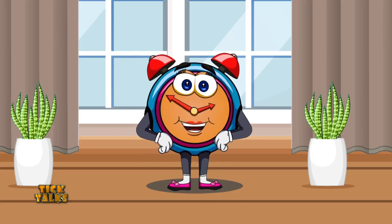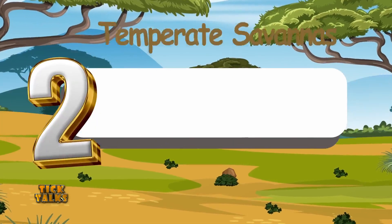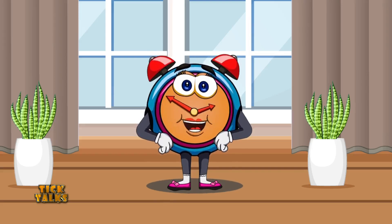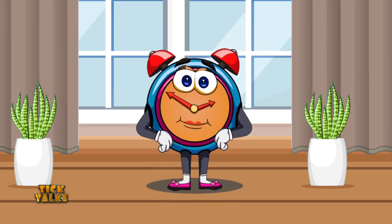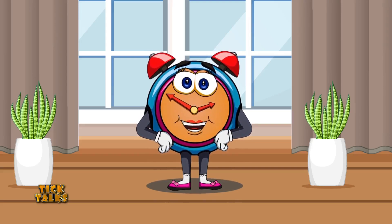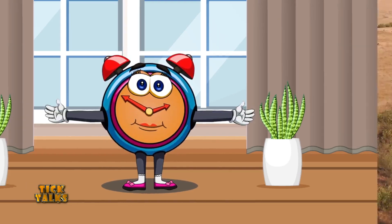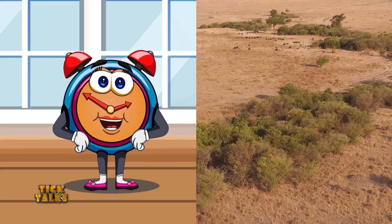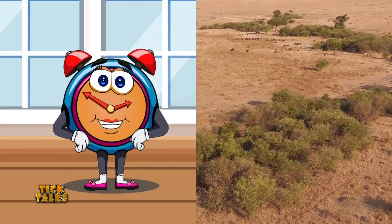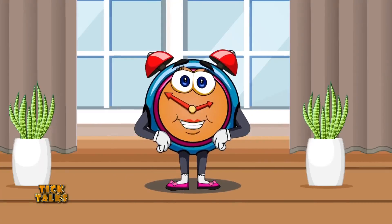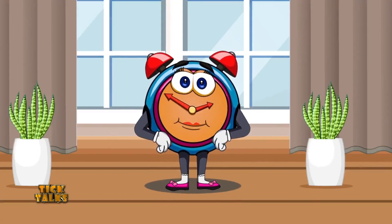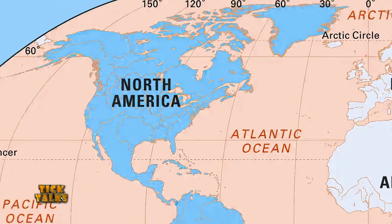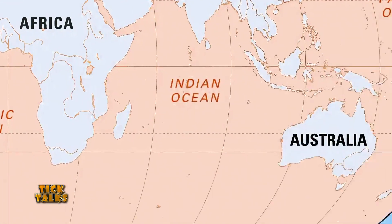Number two, we have the temperate savannahs. Temperate savannahs experience distinct seasons including warm summers and cold winters. They are common in North America, South America, and Australia.